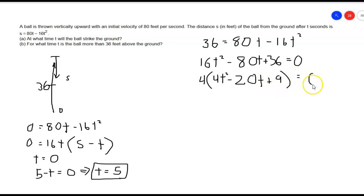So 4t squared minus 20t plus 9. The fact that we were able to factor the 4 out of it means that both of these quadratics will have the same zeros, because we can just set this equal to 0 now.